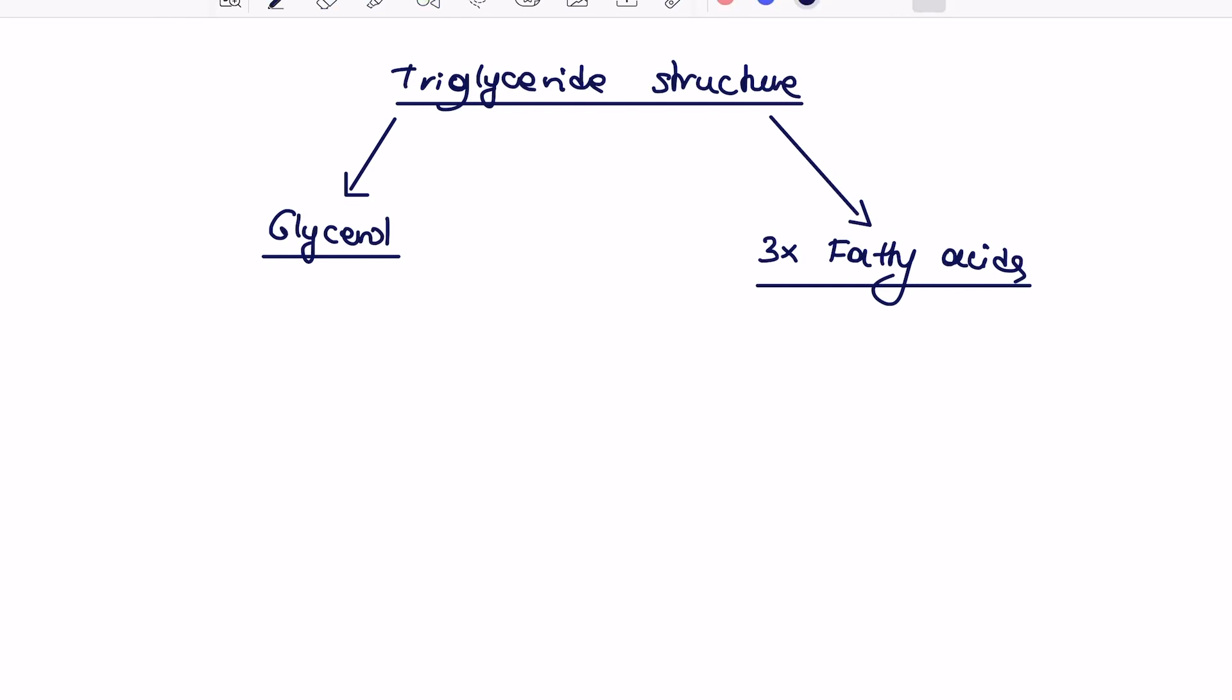In GCSE you might have drawn it as a rectangle with three branches, but from now on you have to actually know the chemical structure of glycerol, which I have drawn here for you, which consists of three carbons and three hydroxyl groups attached to it. Keep this in mind. If you didn't know this, learn it by heart.